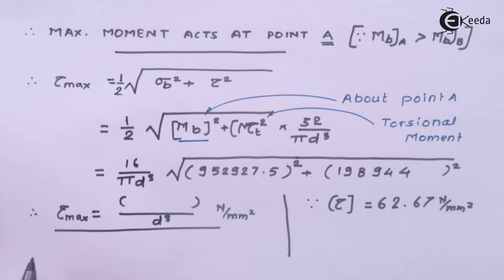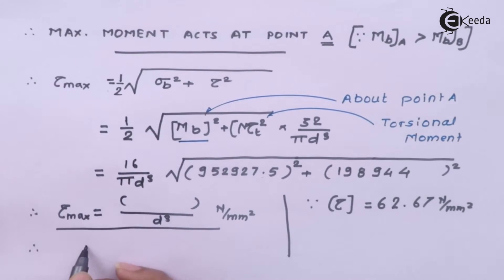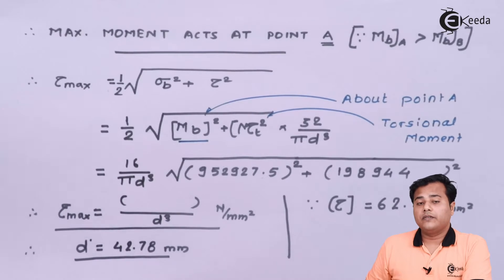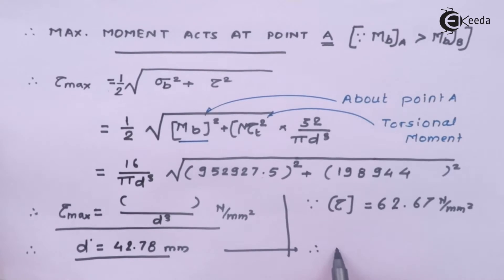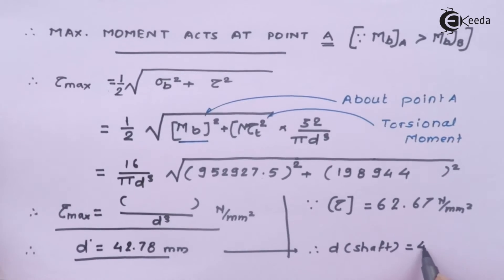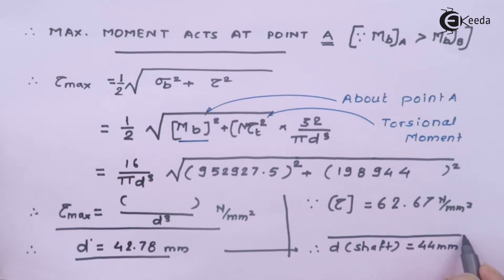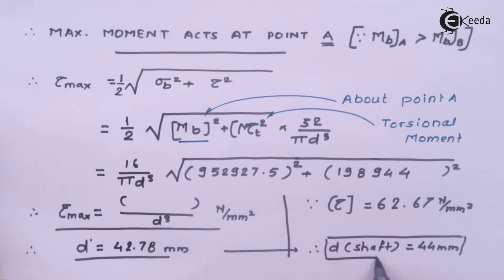We already know that the maximum allowable stress in our case is 60 N/mm². If we substitute this value, we can get d³. From the calculation, d comes out to a value. This is not the preferred value, so we can raise this value. Therefore, d shaft comes out to be 44 millimeters, and that is the final answer for the design of this particular shaft.